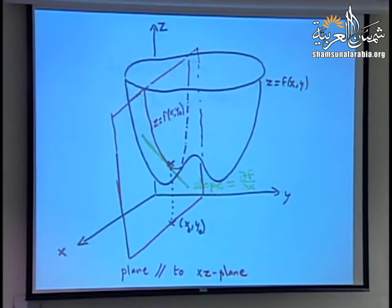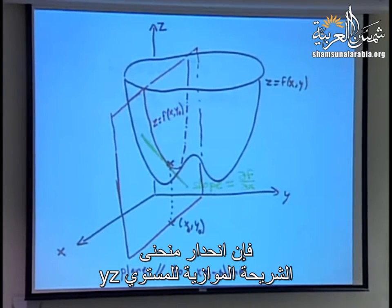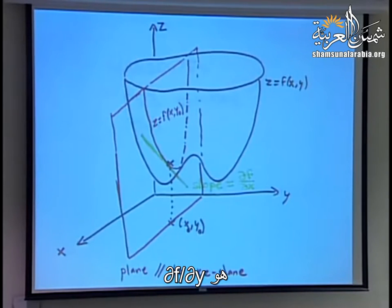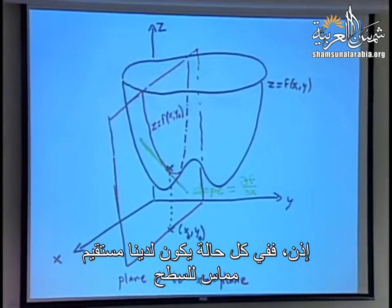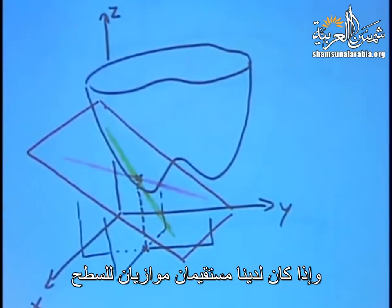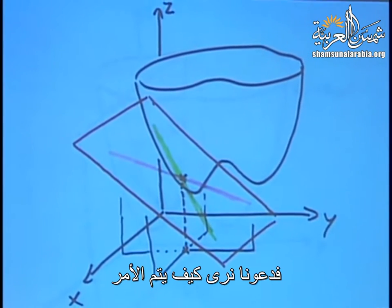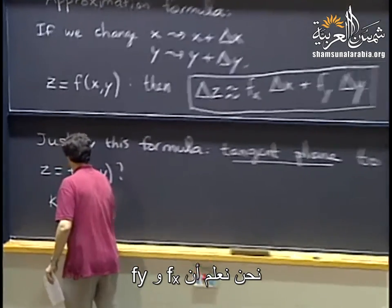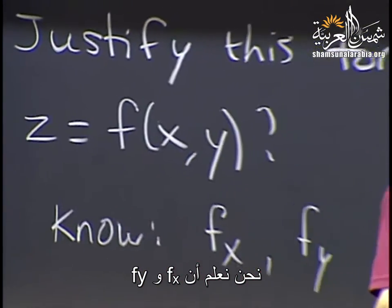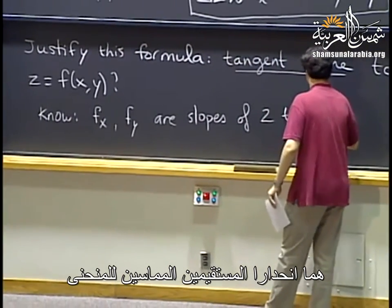If I do the same in the other direction, I have the slope in a slice parallel to the yz plane, which is partial f, partial y. In each case I have a line tangent to the surface. If I have two lines tangent to the surface, together they determine the tangent plane to the surface. So f sub x and f sub y are the slopes of two tangent lines to the graph.